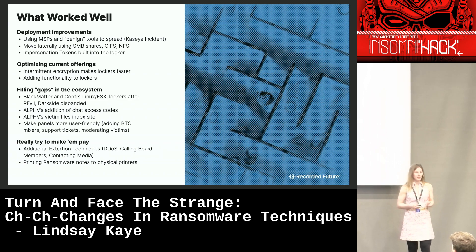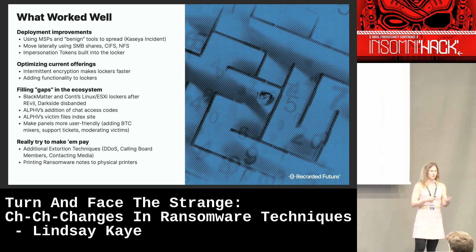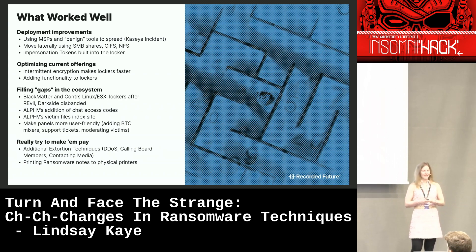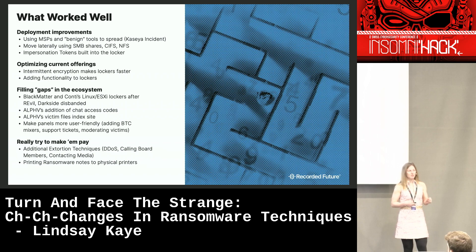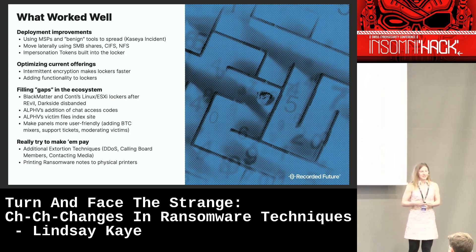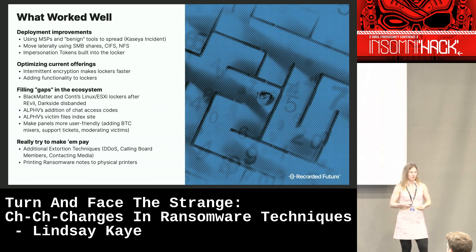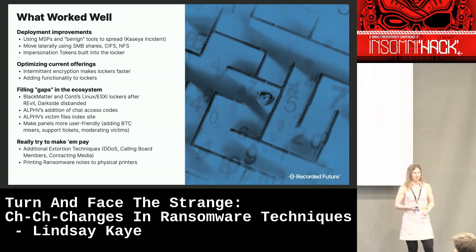Some threat actors like Alpha and others have started building impersonation tokens into the locker to allow it to spread itself. Additionally, there's been optimization of current offerings — a lot of groups are using intermittent encryption because they want to make lockers faster. Faster means more damage and more profit. Groups are also adding additional functionality to lockers based on affiliate demand, looking at what other groups have and ultimately trying to attract more affiliates.